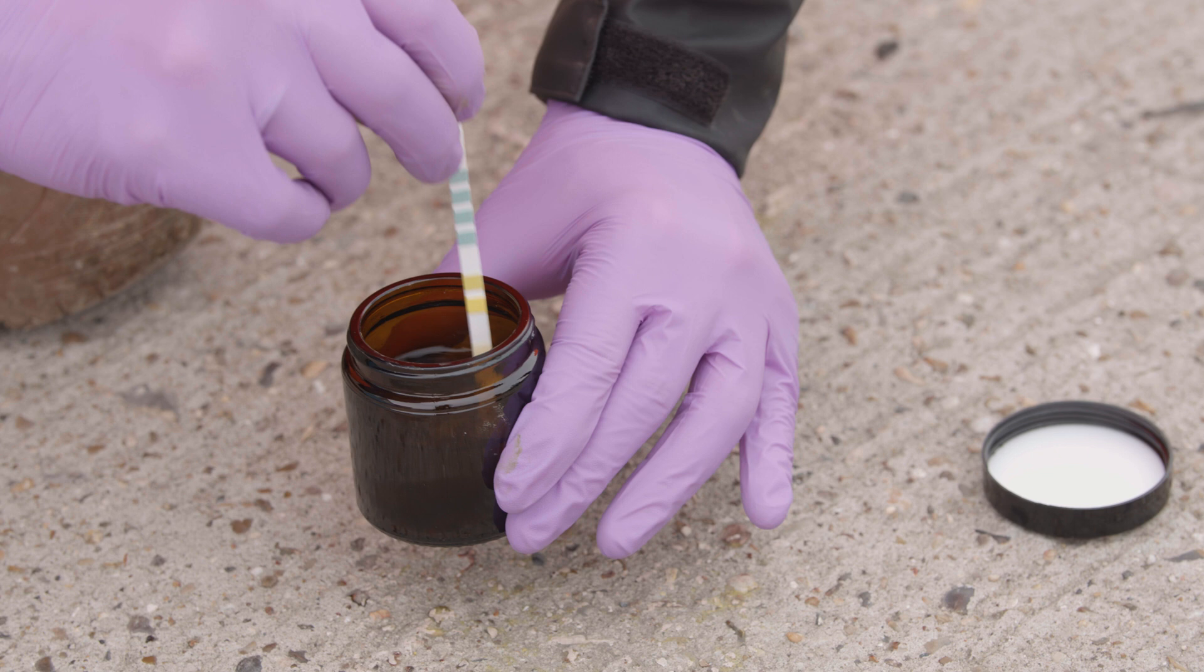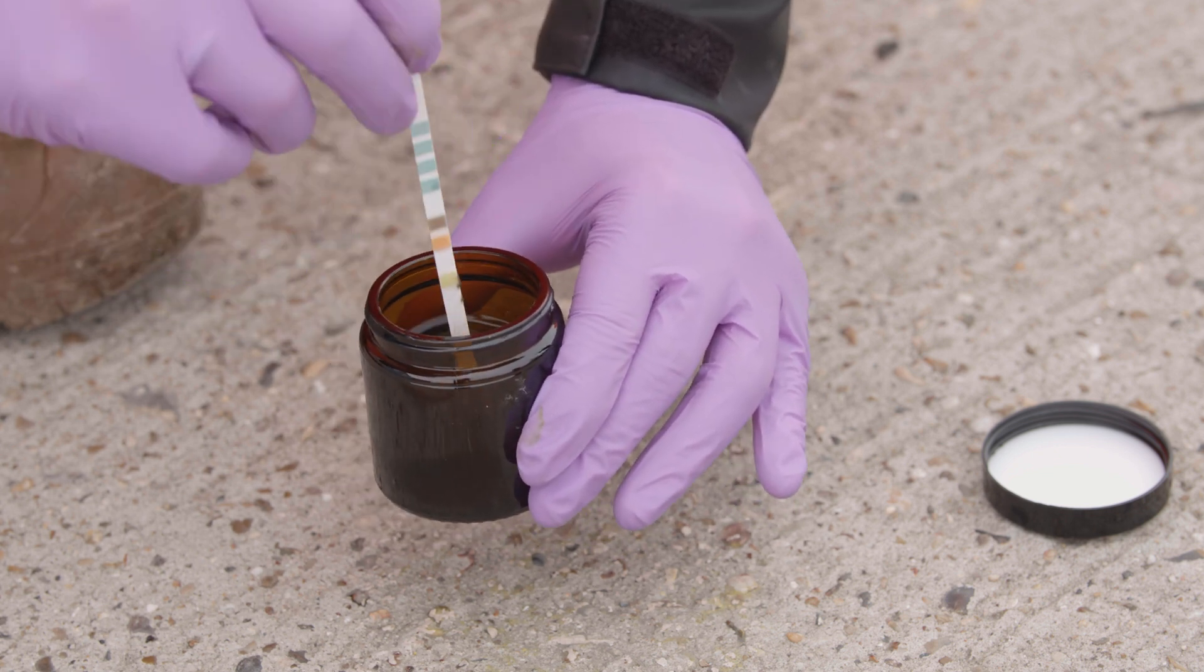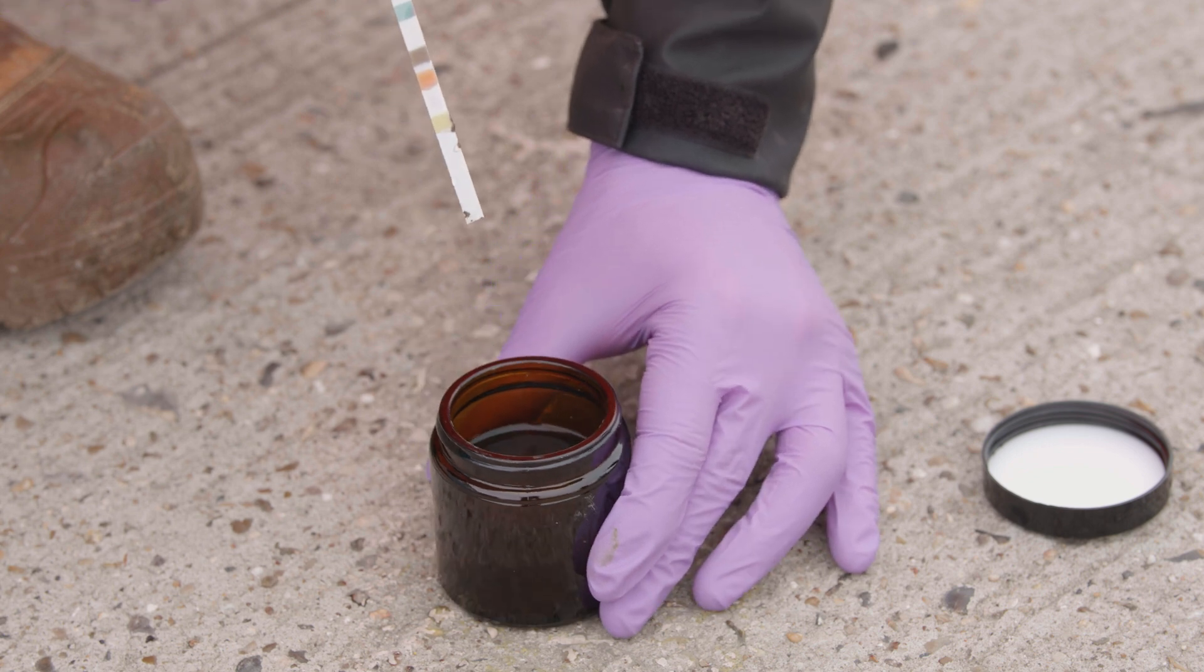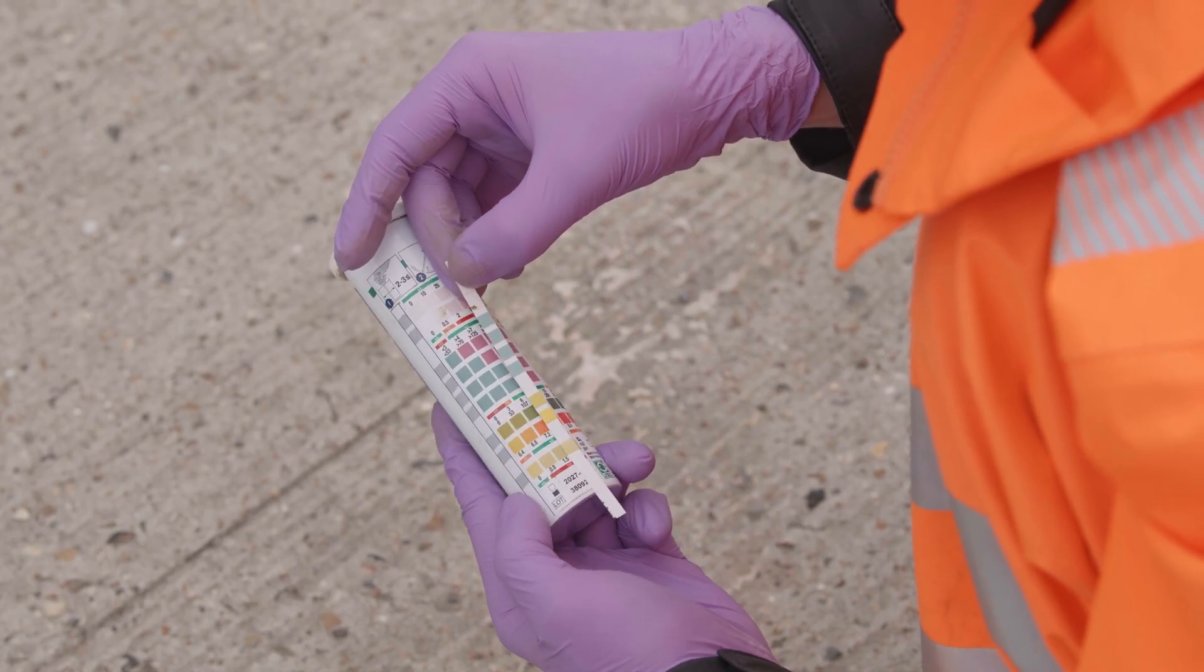Now apply the universal litmus paper to the wet soil. The color reaction happens quickly, usually within 10 seconds. Compare the color of the test strip to the standard pH chart provided.